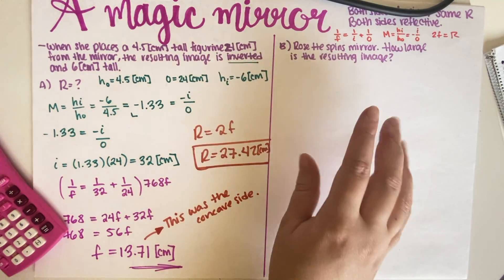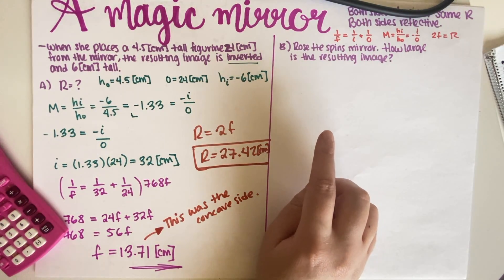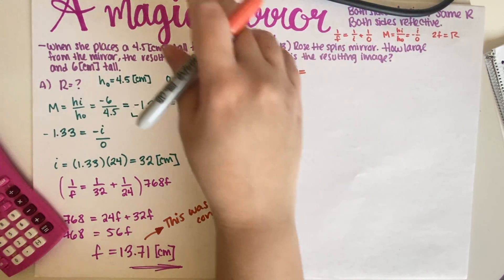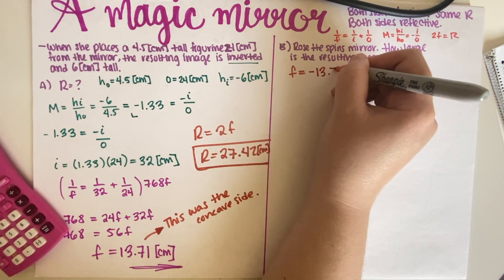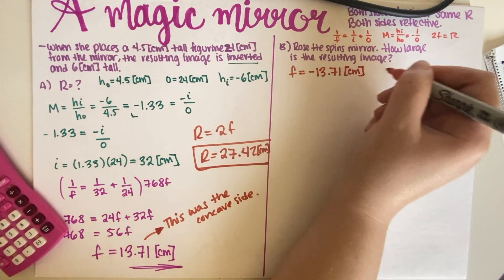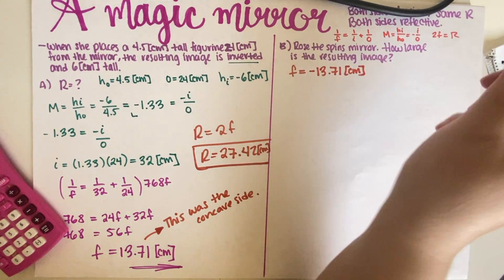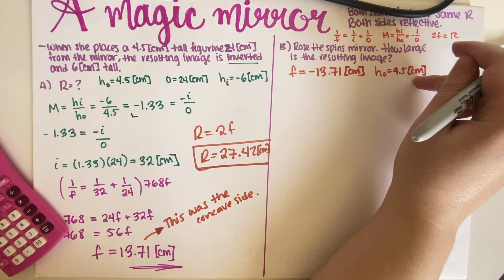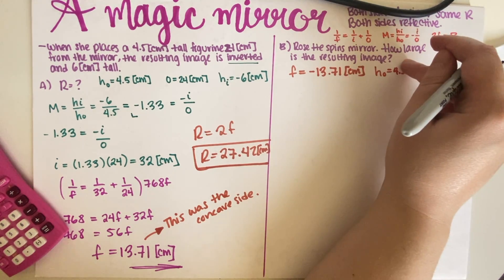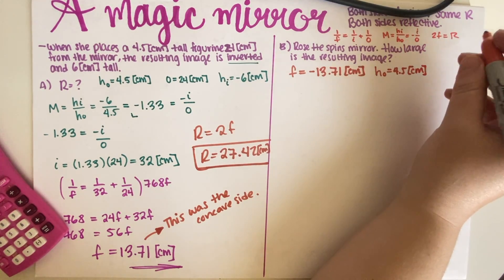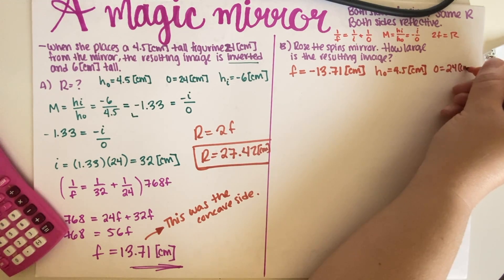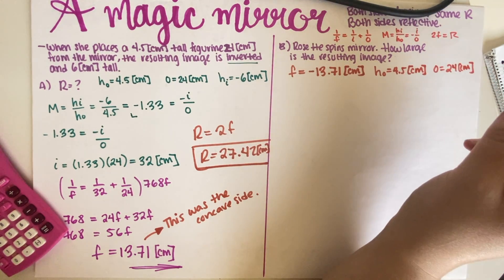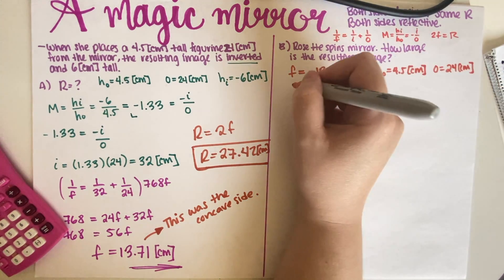Now we have the same R, which means the same magnitude of F, except that since the mirror has been spun around we're now working on the convex side, so the new F is negative 13.71 centimeters. The object height is still 4.5 centimeters and, since neither the figurine nor the mirror was moved, the object distance O is still 24 centimeters. We need to find the image height H_I.